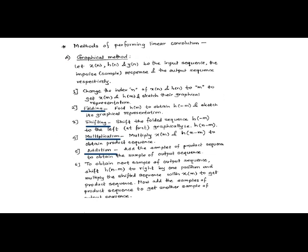There are following methods of performing linear convolution for discrete time systems. The first is the graphical method, where we start with x(n) as the input sequence and h(n) as the impulse response of the LTI system. In the first step, we change the index of x(n) and h(n) from n to m and sketch those signals. Then we choose h to perform a folding operation and obtain h of minus m, followed by shifting to obtain h of n minus m. Then we perform multiplication between x of m and h of n minus m to obtain the product sequence.